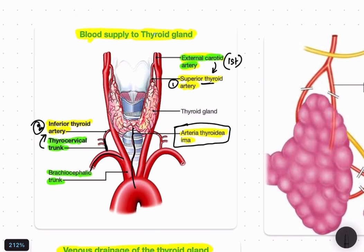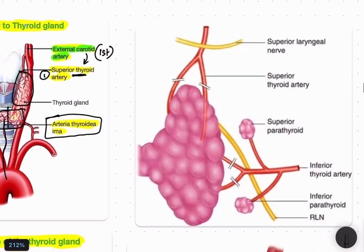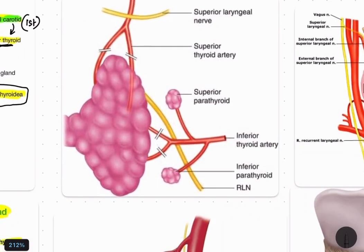The superior thyroid artery supplies the upper pole and middle portion of each lobe. The isthmus is supplied by the thyroidea ima arteries. The inferior thyroid artery supplies the lower portion or lower pole and also the isthmus.